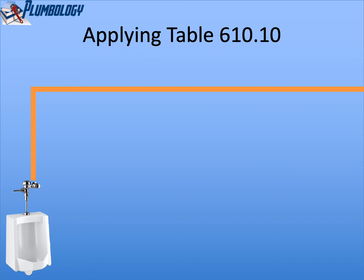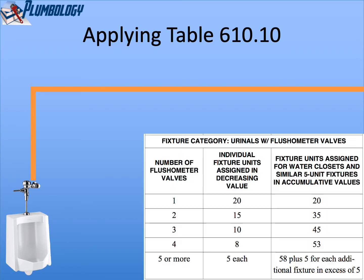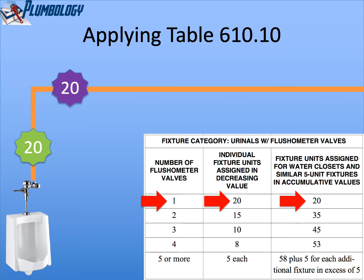Now looking at urinal flush valves. If we have a single urinal with a flushometer valve, according to the table for the category of urinals with flush valves, one urinal flushometer valve will be given a value of 20 fixture units. So we write 20 near the flush valve. The accumulative value would be 20, and the pipe serving that flush valve would be sized for 20 water supply fixture units.